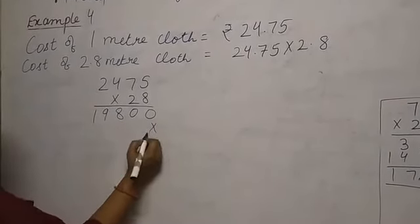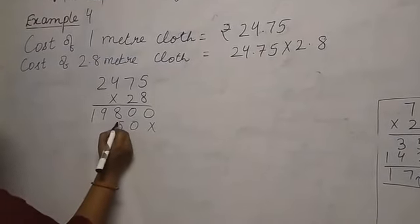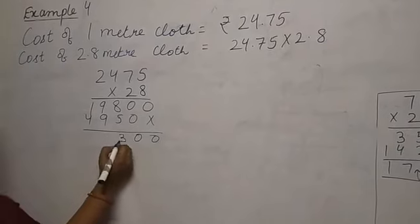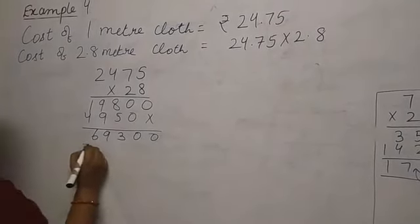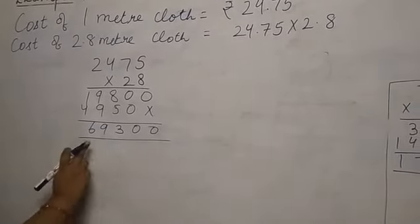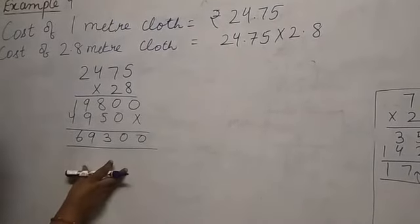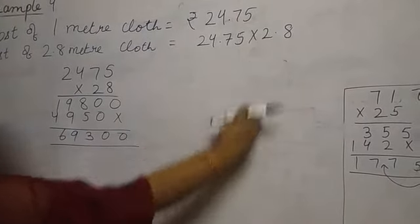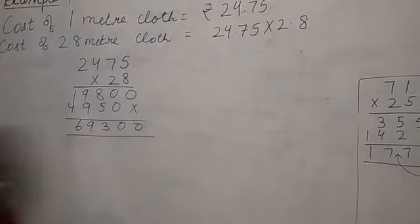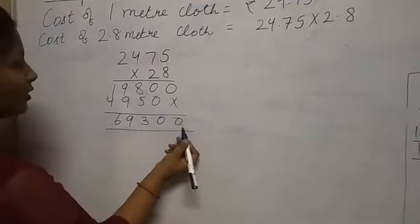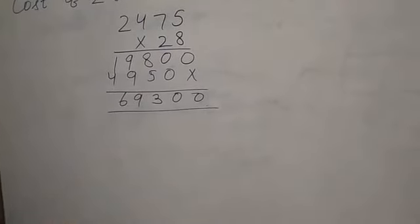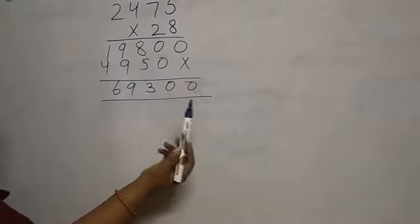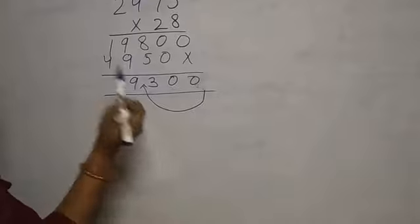Ignore the decimals and do multiplication: 2475 × 28. Try to solve it in your notebook. The answer is 69300. Now, where do we place the decimal? 24.75 has two digits after the decimal; 2.8 has one digit. Total: three digits.